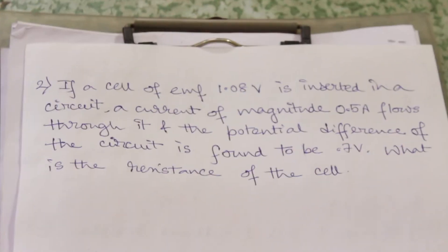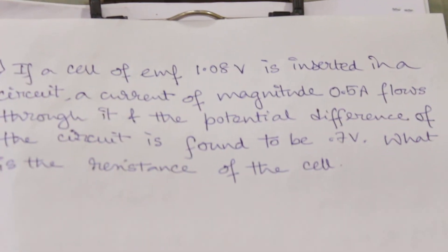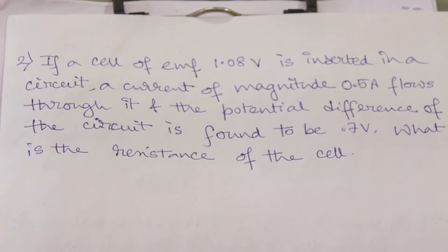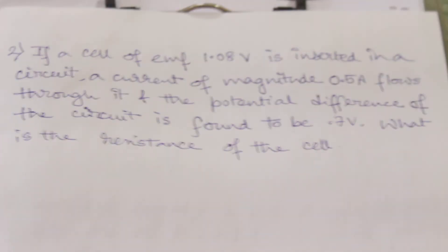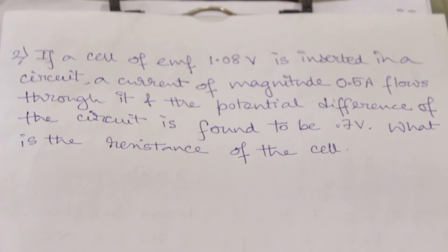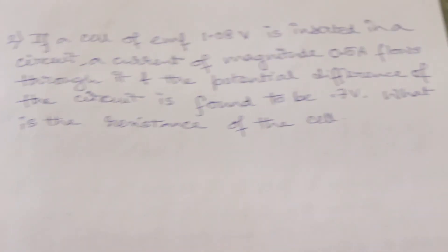So moving on to our next example: If a cell of EMF 1.08 volts is inserted in a circuit, a current of magnitude 0.5 amperes flows through it, and the potential difference of the circuit is found to be 0.7. What is the resistance of the cell? That means, what is the internal resistance of the cell?